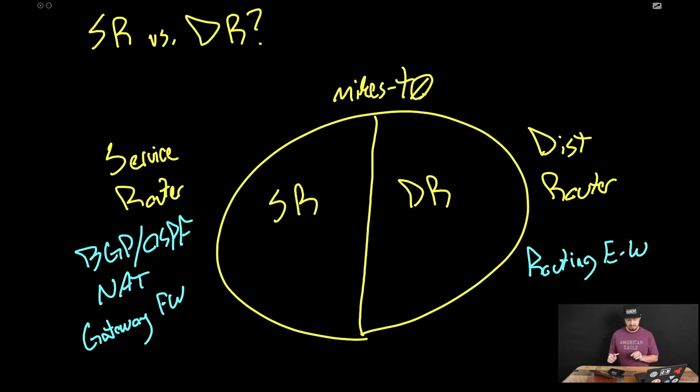Now here's the thing. So the distributed router lives on your transport nodes, which in most cases that would be vSphere host, but that also does include your edge nodes because that is a transport node. And the SR always lives only on your edge nodes.